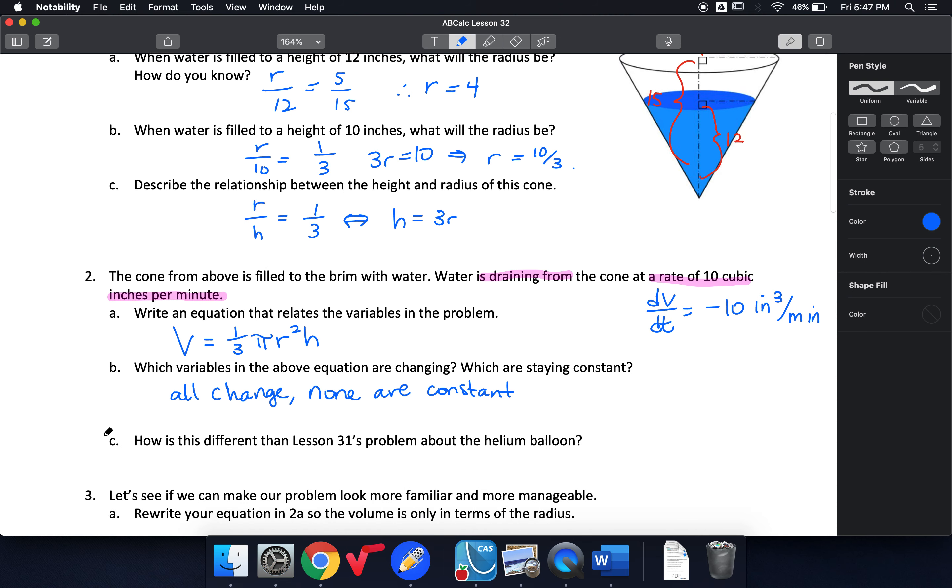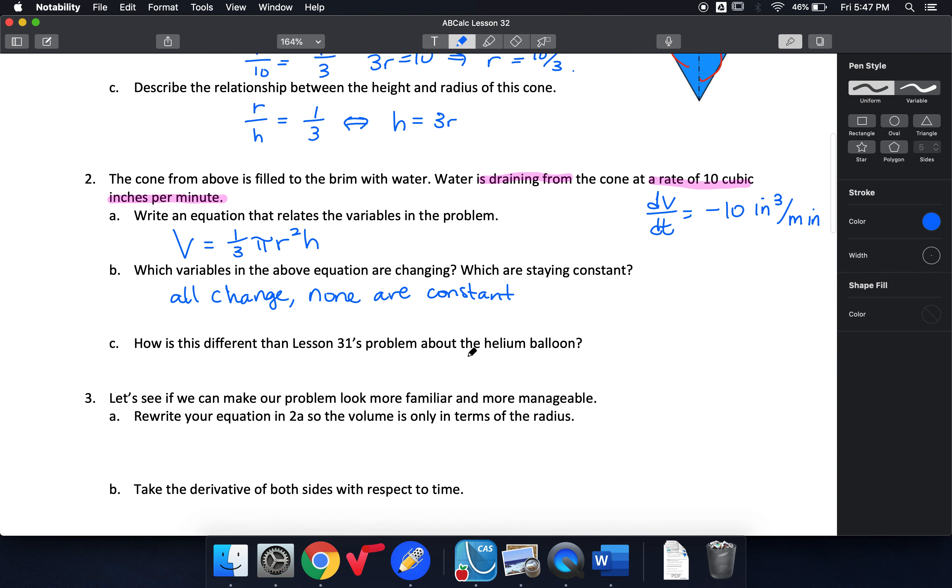Okay, so how is this different from our problem with the helium balloon? Well, with the helium balloon it was a sphere. It only had two variables. This problem we have three variables now. So we have more variables. We have volume, radius, and height. And with our sphere we only had volume and radius.